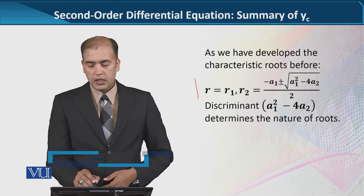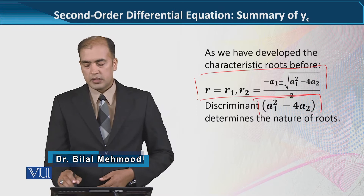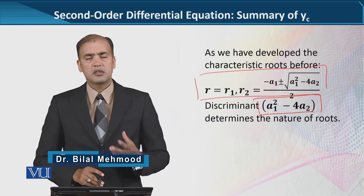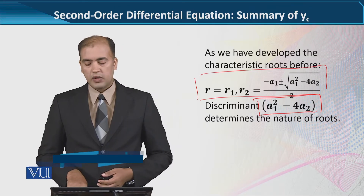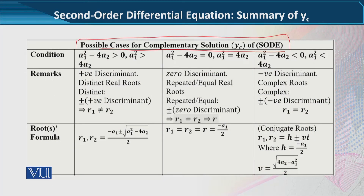The roots were equal to this, and this was the part that determined the fate of the roots — that is the discriminant, جو کہ a1 square minus 4a2 کے برابر تھا. اور اس کو use کرتے ہوئے ہم نے ایک table develop کیا ہے جس میں possible cases of complementary solution دیئے ہوئے ہیں.